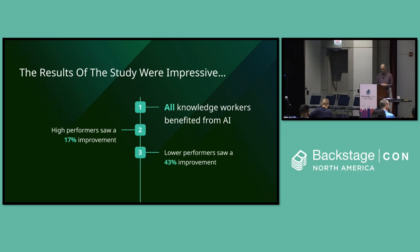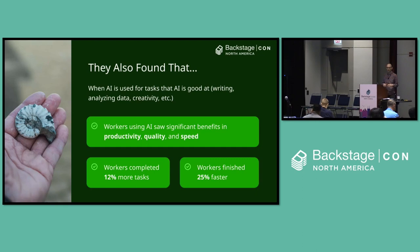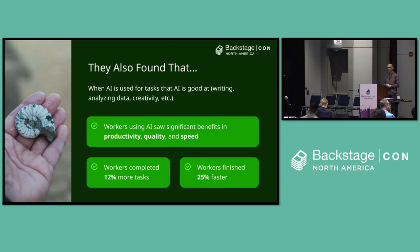They also found that when they used AI for tasks that it's really good at — things like writing, analyzing data, and creativity — the workers who used the AI saw significant benefits in their productivity, quality, and speed. These sorts of productivity improvements don't come along very often, perhaps once in a generation. The workers also completed about 12% more tasks and tended to finish 25% quicker — one quarter quicker than when they were working without the AI.